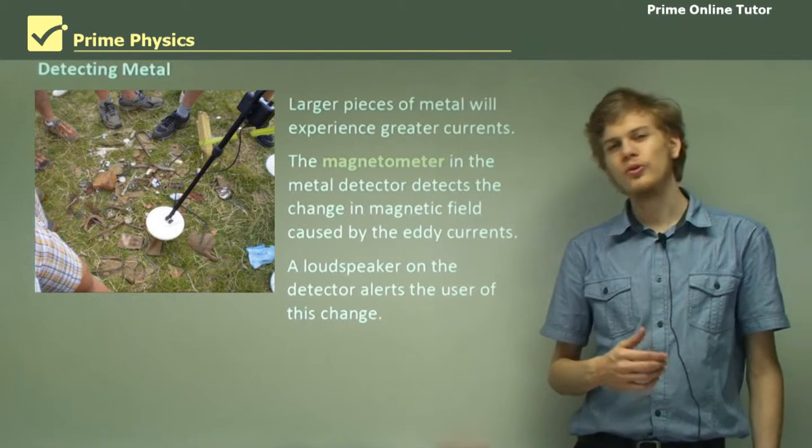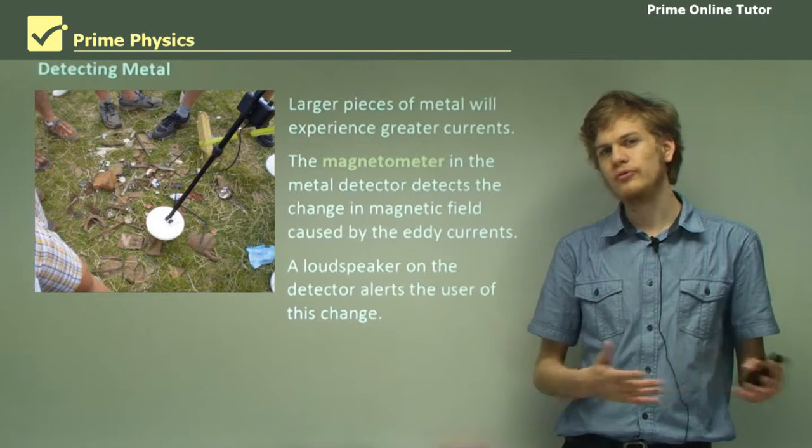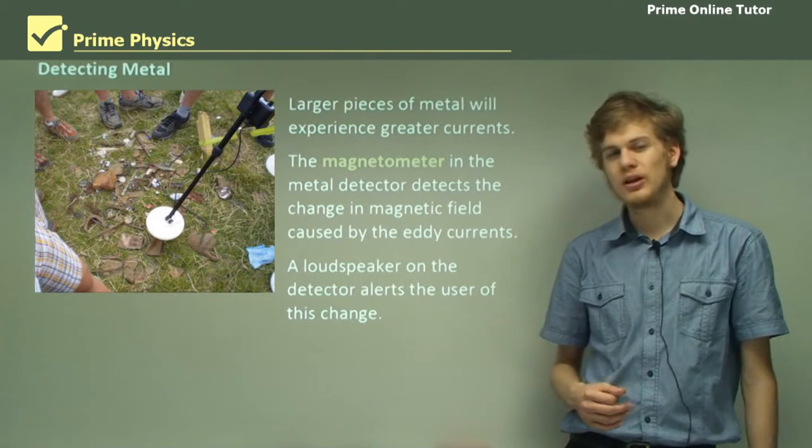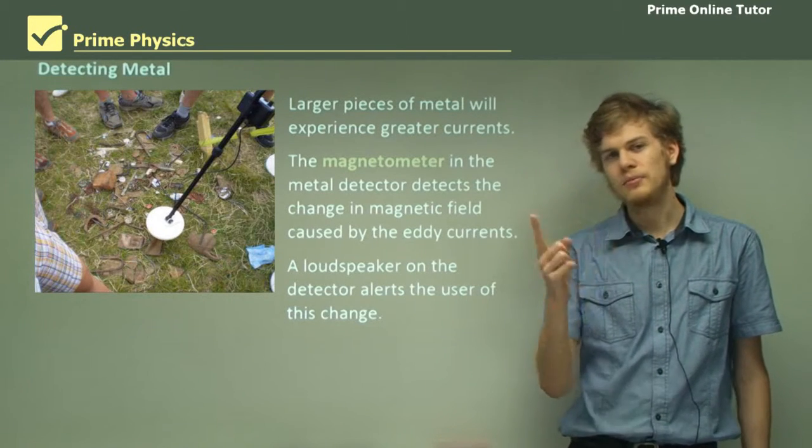A loudspeaker on the detector can alert the user of this change. We can also use different sorts of alerts like a blinking light or a meter that moves up and down.